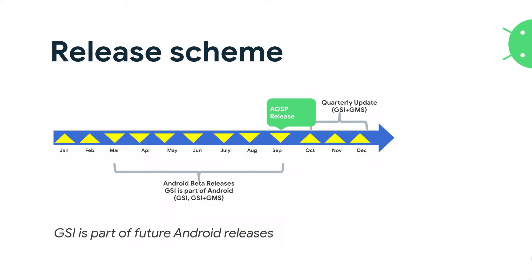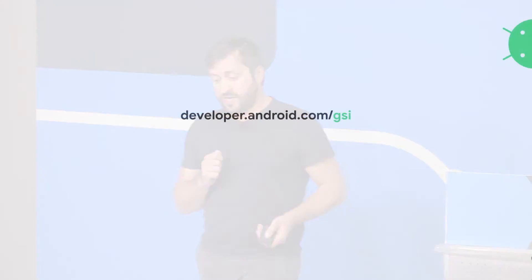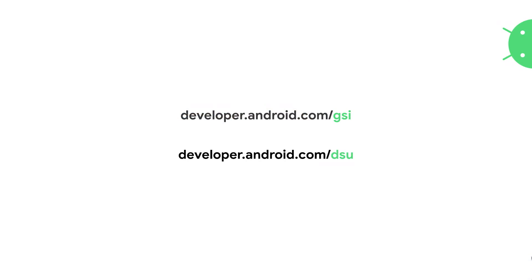So, GSI releases. As I mentioned, we produce GSIs for all beta releases. Then when we push to AOSP, we issue GSIs there as well, and on a quarterly basis thereafter as we publish security fixes and critical bug fixes. You can do awesome things with GSIs, and Cloud Android is another virtual device available on AOSP — you can Google that and instructions will come up. The instructions for GSIs are at android.com/GSI, and DSUs at android.com/DSU. Thank you.